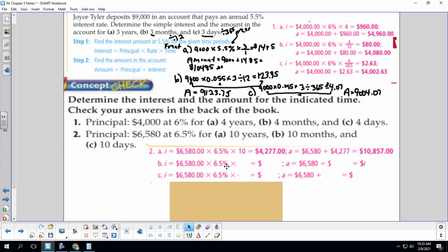So now we're going to do that same calculation, but for 10 months. So we have the times by 10, but because it's months, we're going to divide by 12. So $6,580 times 6.5% times 10 divided by 12. $356.42. Then add that to your original amount, and your grand total is $6,936.42.